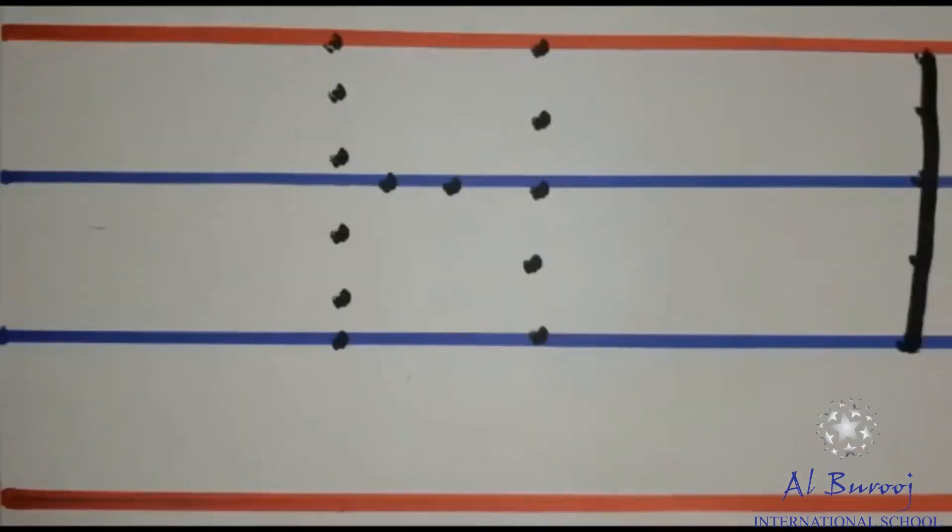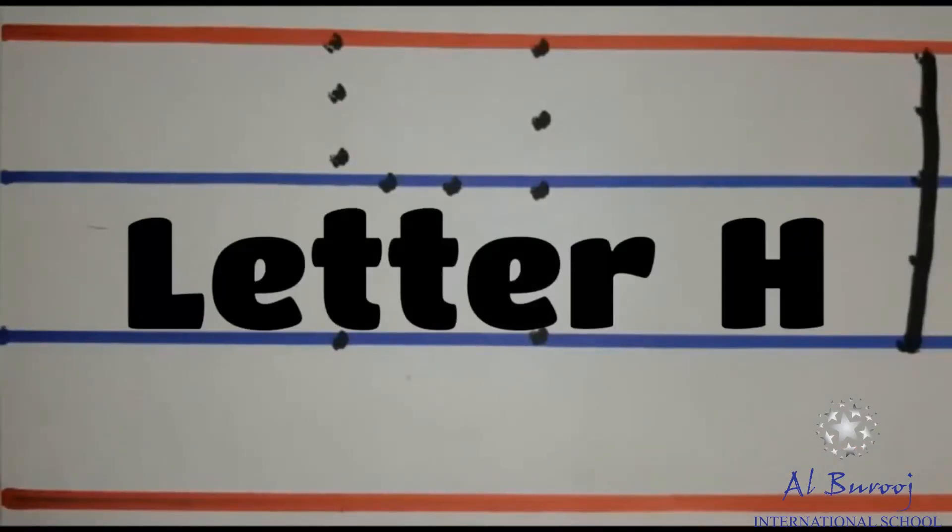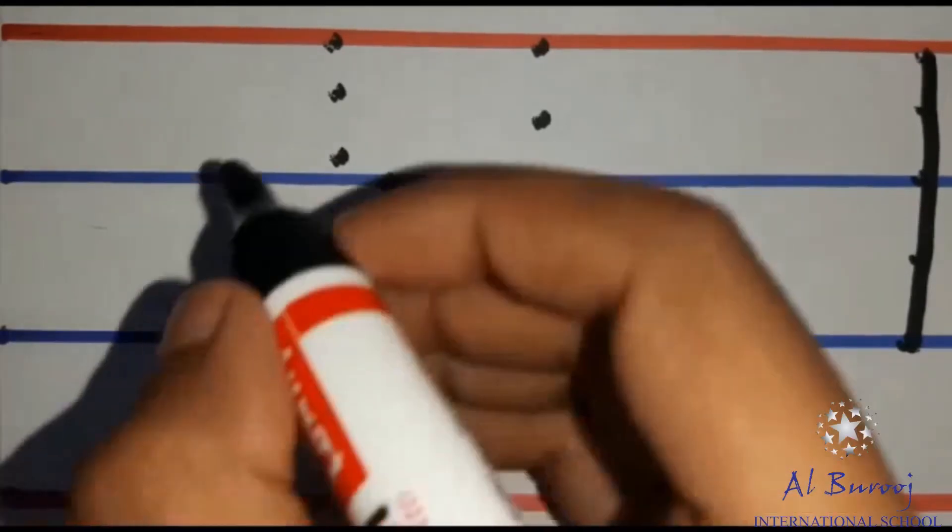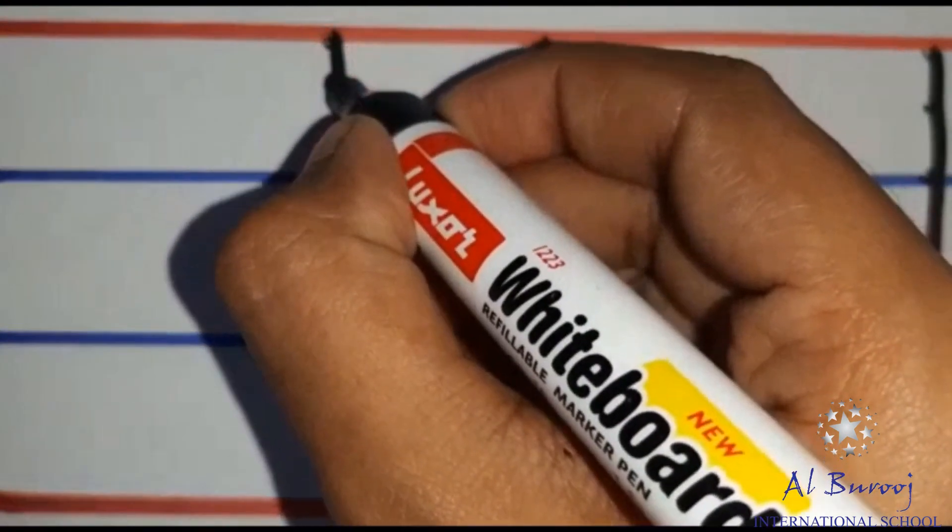Now, let's learn how to trace the letter H. Start joining the dots from the first line till the third line in form of a standing line.